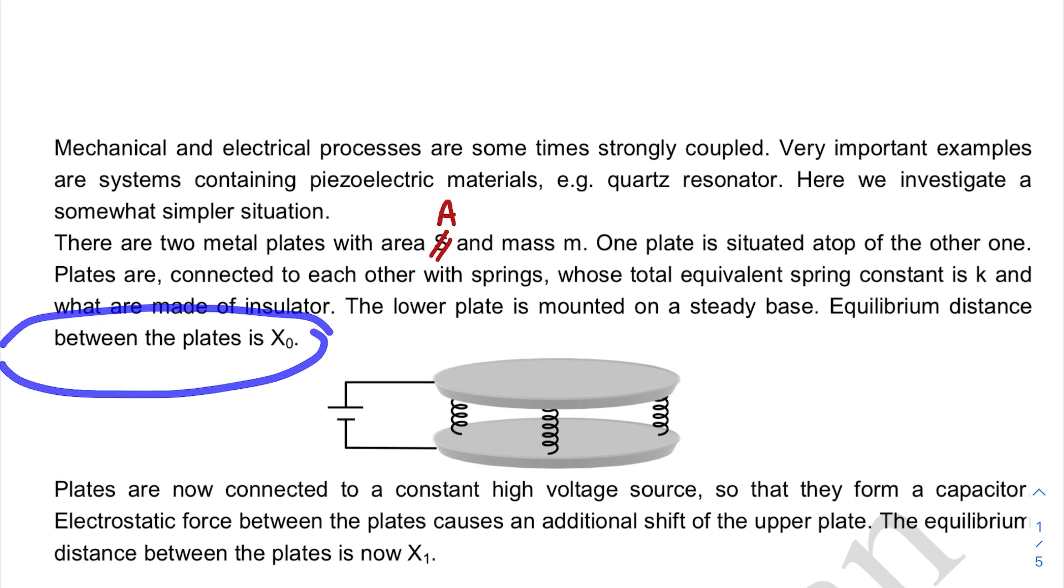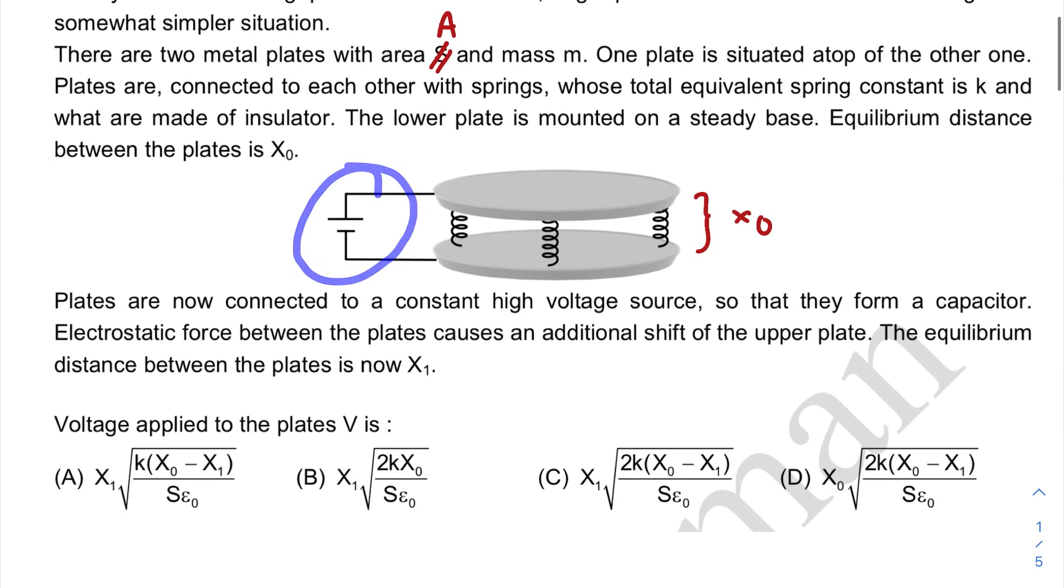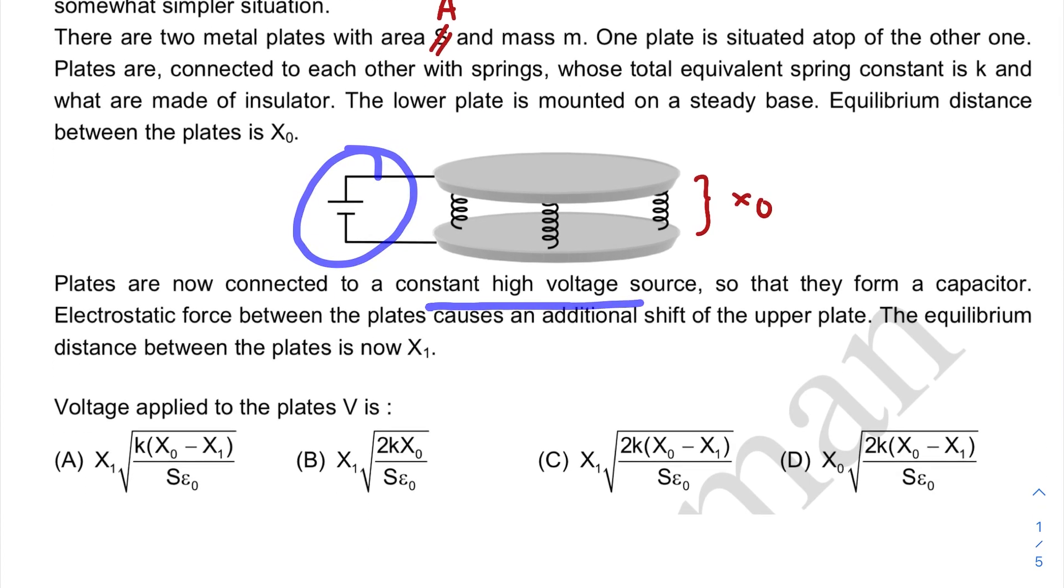The lower plate is mounted on a steady base. The fixed equilibrium distance between the plates is x naught, so initial distance is x naught when there is no battery involved here. Plates are now connected to a constant high voltage source so that they form a capacitor.